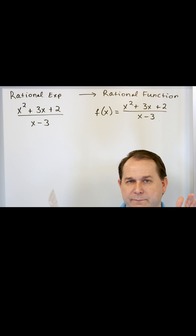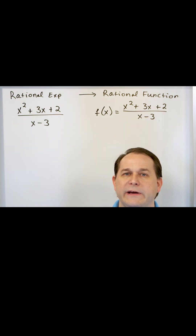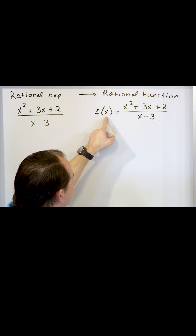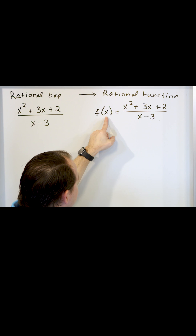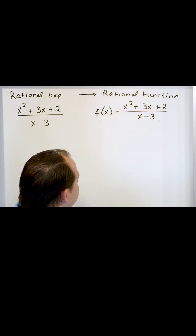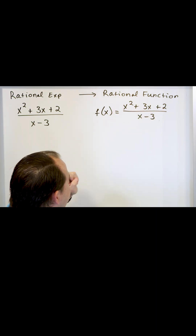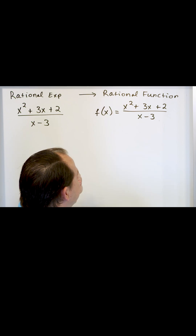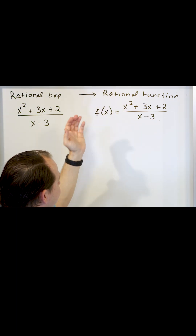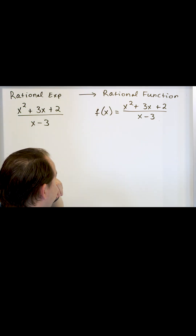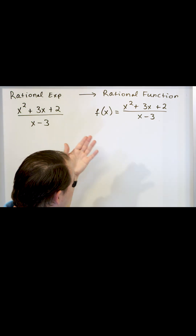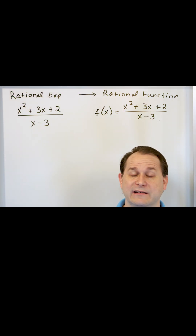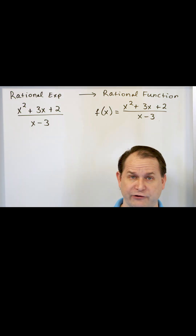That forms a pair of numbers that we can plot on a graph. So I can literally say x is equal to zero and calculate what the corresponding f of x value is. I can say x is equal to one and calculate the corresponding f of one value. Two, three, four, negative five, negative six — I can calculate lots and lots of points and just plot them.